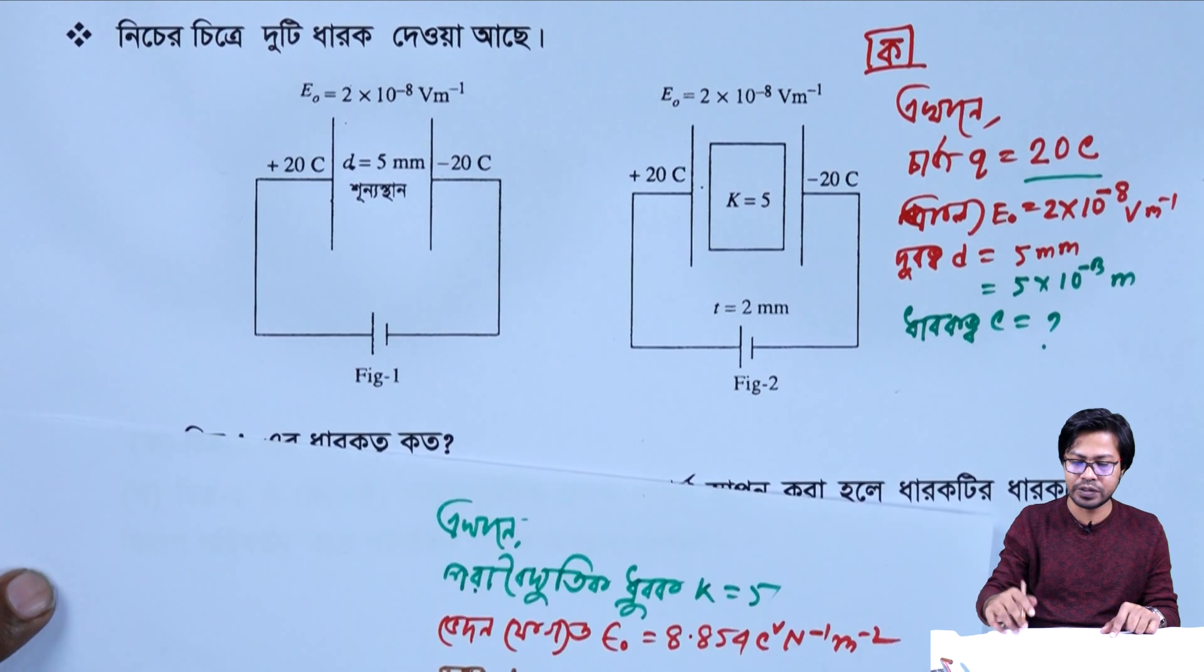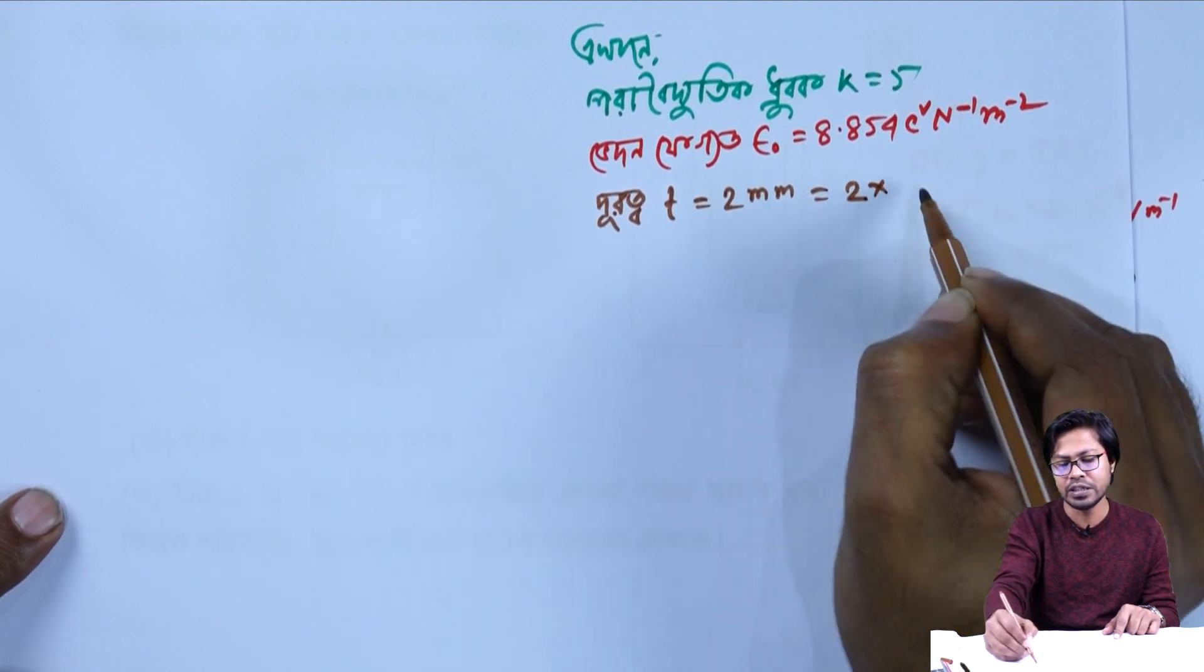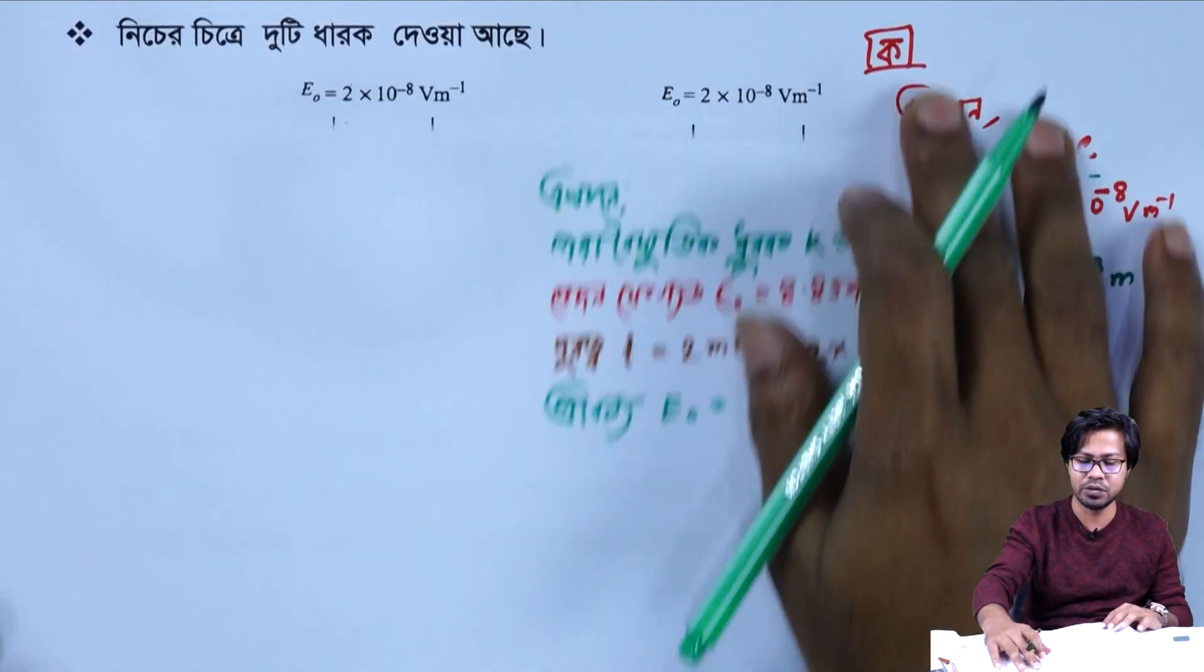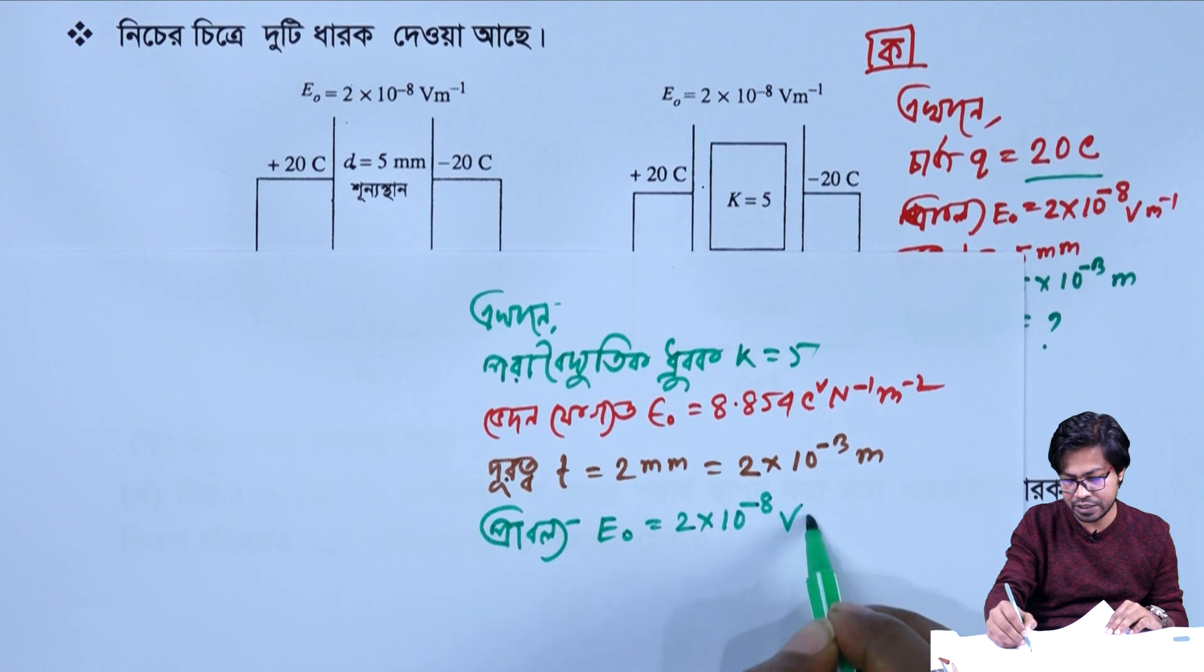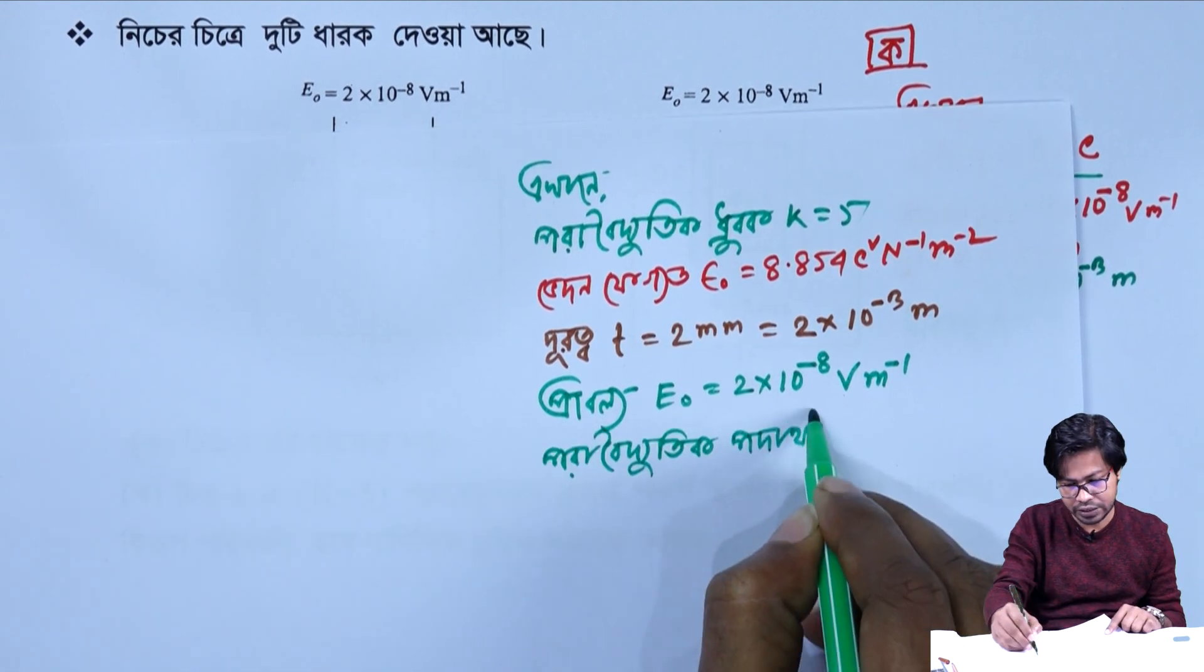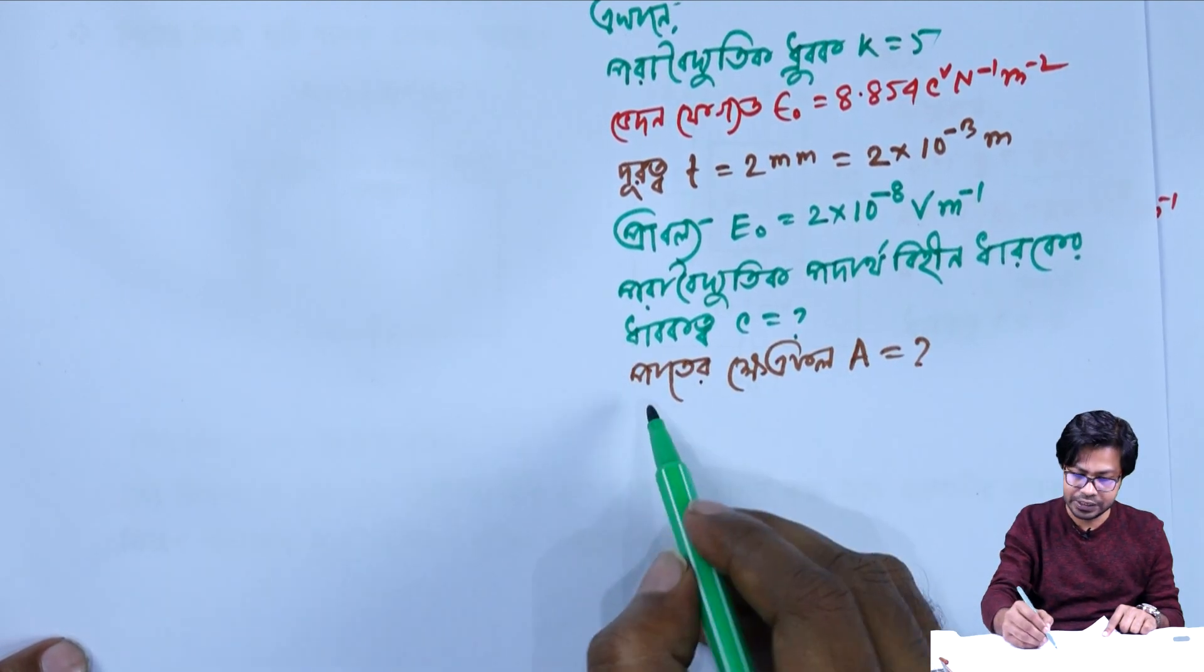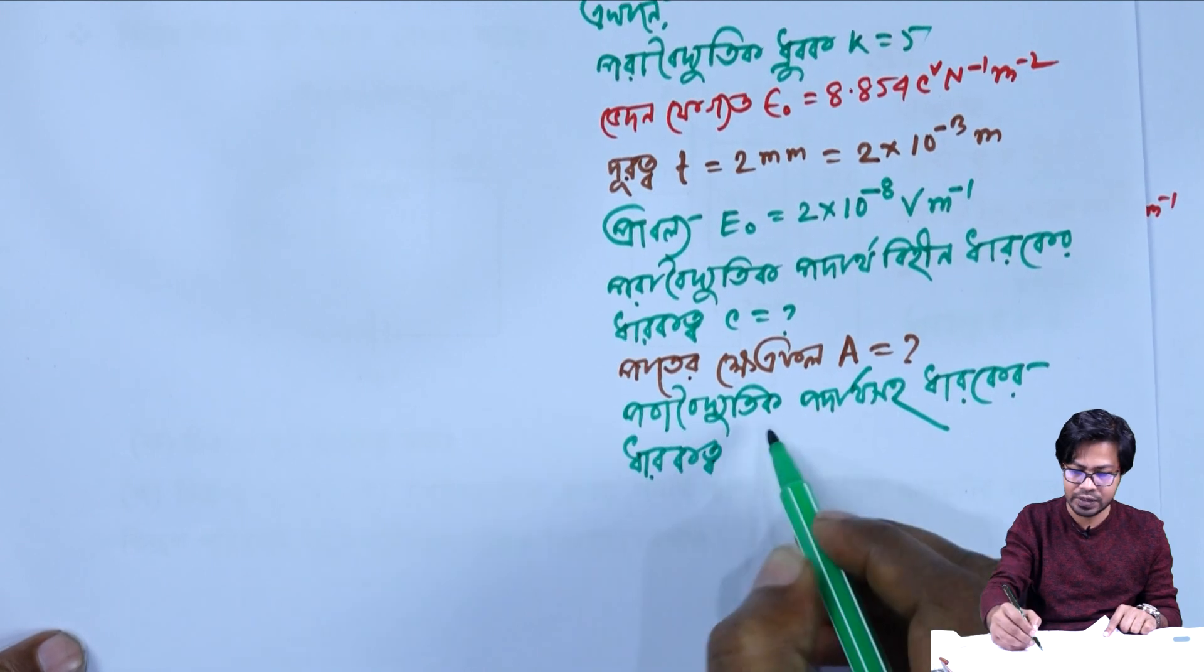A t equals to 2 mm, so 2 mm to convert, 2 into 10 to the power minus 3 meter. E₀ is minus. C comes to be, the table A is equal to what A supposed to be. C, so the previous version.